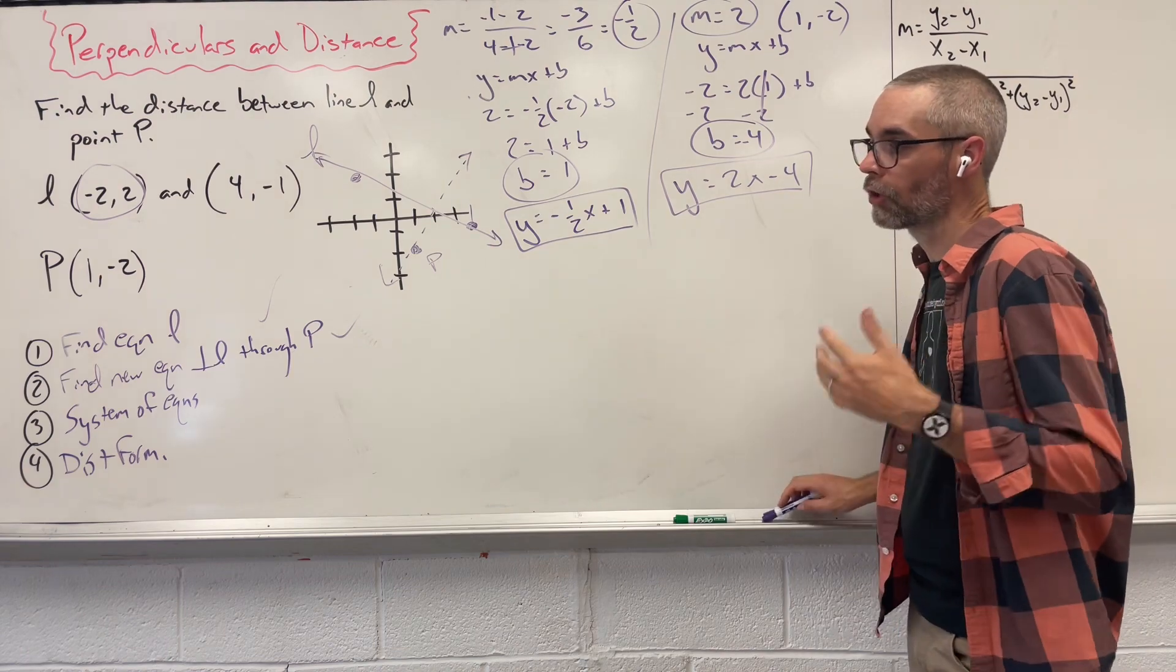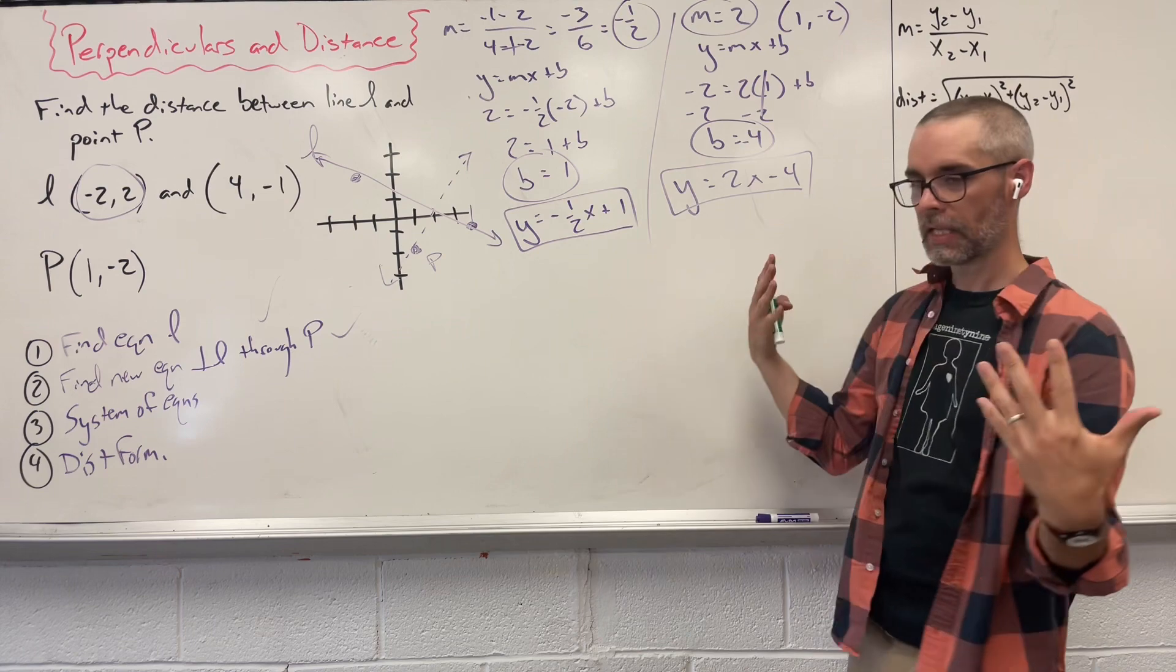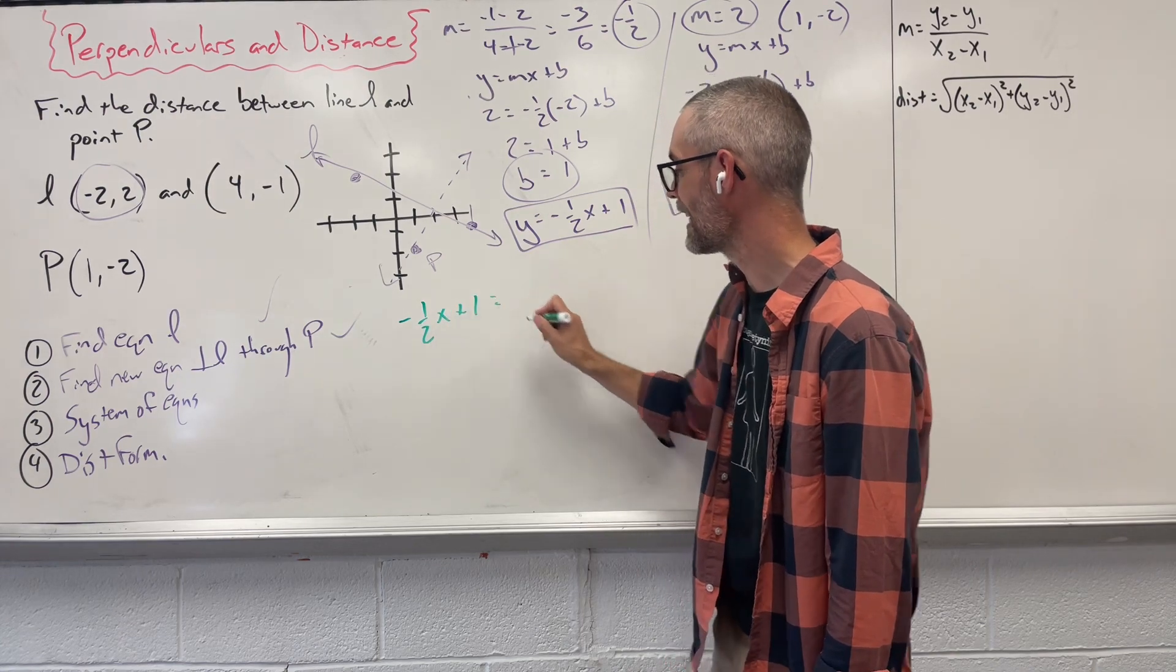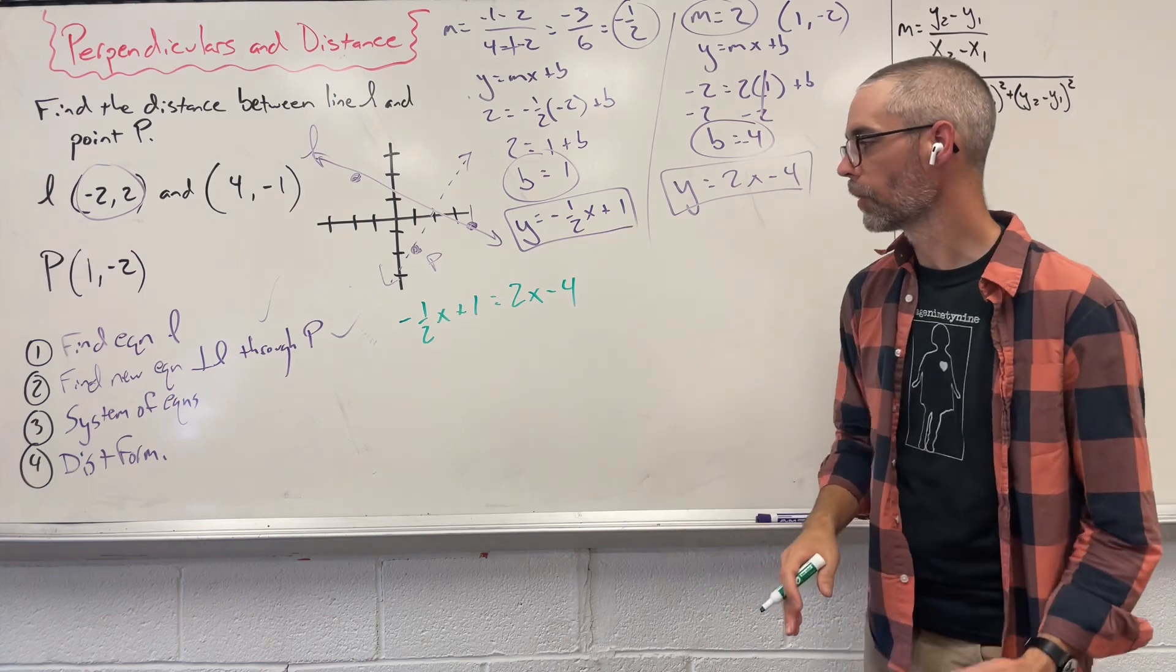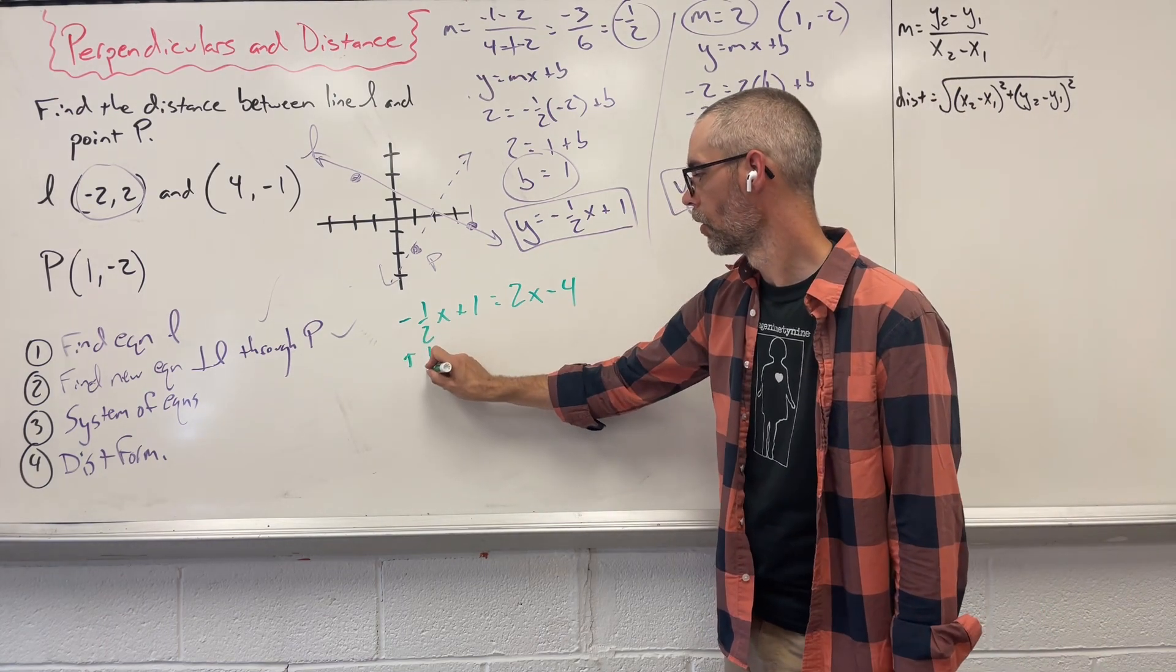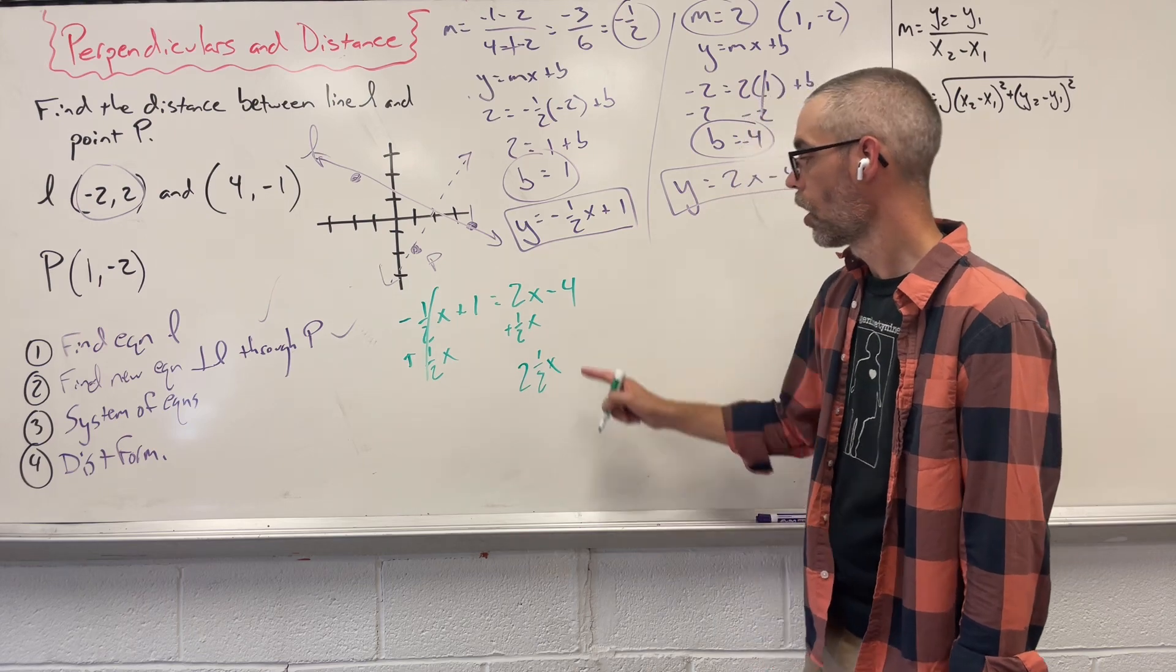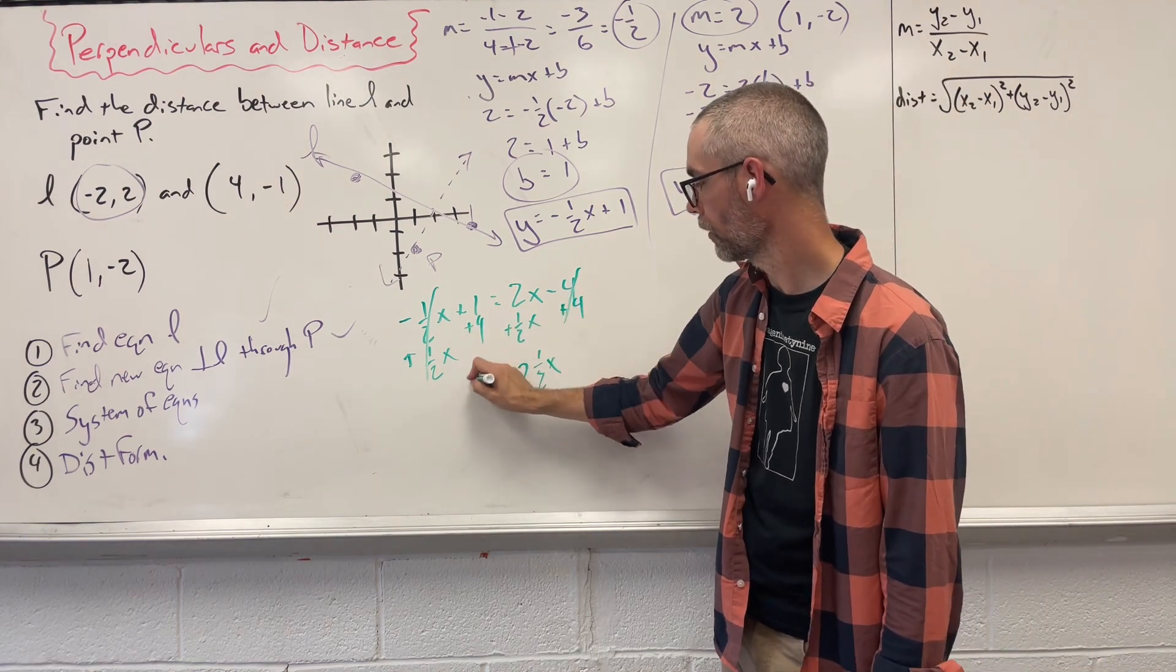Part 3. Now, we need to create a system of equations. I want to take both of these, set them equal to each other. So, we're going to say negative 1 half X plus 1 equals 2X minus 4. Let's add 1 half X plus 1 half X. Those are gone. We're left with 2 and a half X. Let's add 4, add 4, giving us 5.